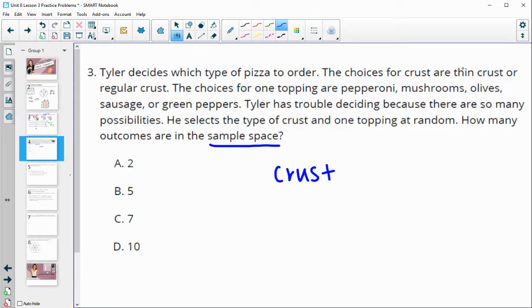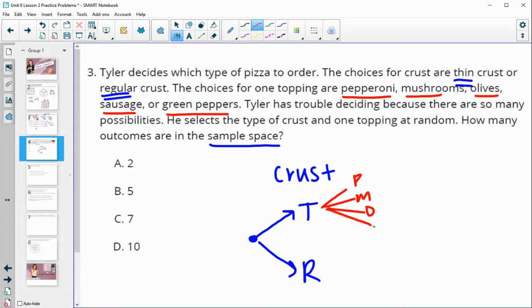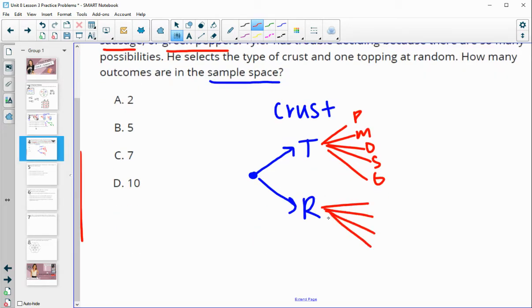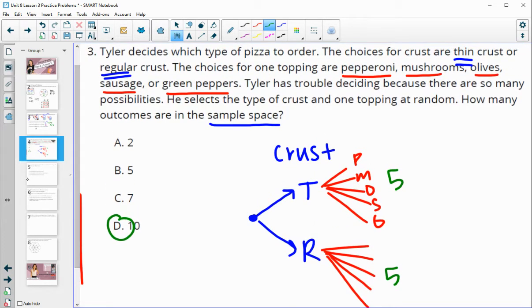So for the crust, he could choose thin crust or regular crust. So if he chooses thin crust, here's his two options, thin crust or regular crust. So that's his first choice. Then once he's chosen the type of crust, then he has pepperoni, mushroom, olives, sausage, or green peppers. So he's got five options there. So he's pepperoni, mushrooms, olives, sausage, green peppers. And he would have those exact same five options here, giving him a total of 10 options in this sample space. Thin with any of these five or regular crust with any of those five would give you a total of 10 options in your sample space.